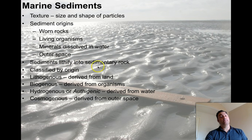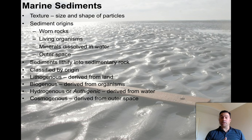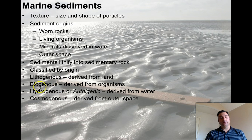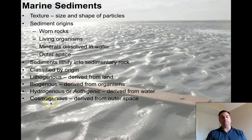Sediments lithify into sedimentary rock — the soft stuff like sands wind up becoming sedimentary rock, what we would call a sandstone. In terms of oceanography, these are usually classified by origin. Lithogenous sediments are derived from land — 'litho' meaning rock, rock-generated, derived from land. Biogenous is life-generated, derived from organisms. Hydrogenous, or authigenic, are derived from water — things that form directly in the water column. And cosmogenous is derived from outer space.